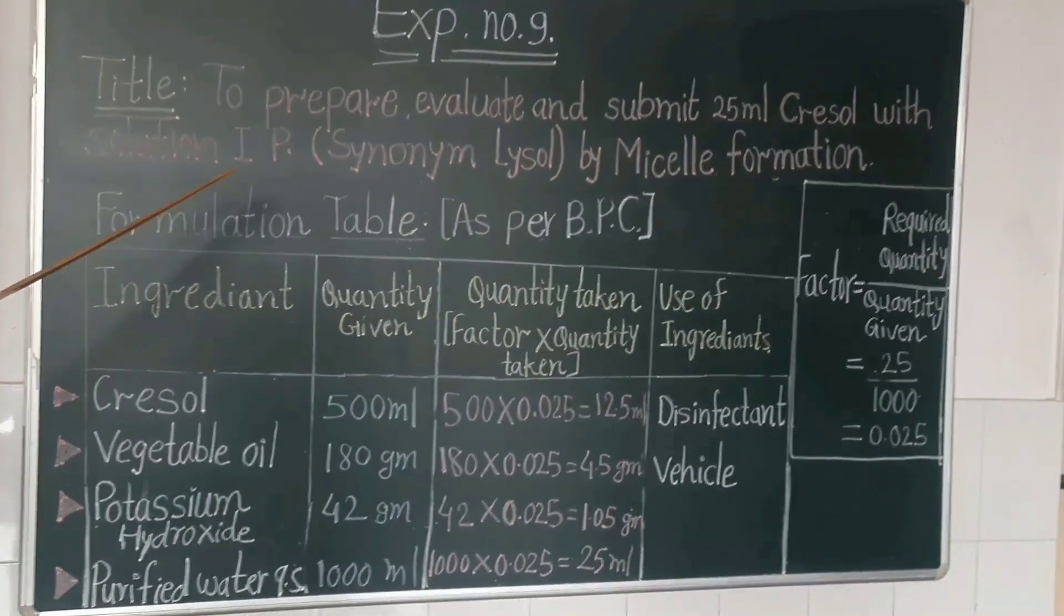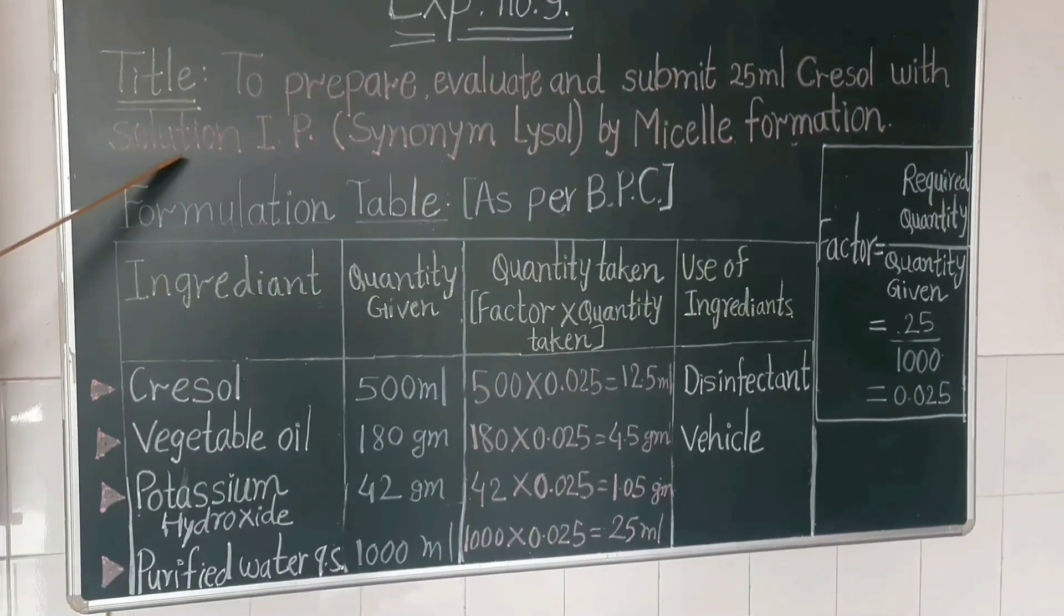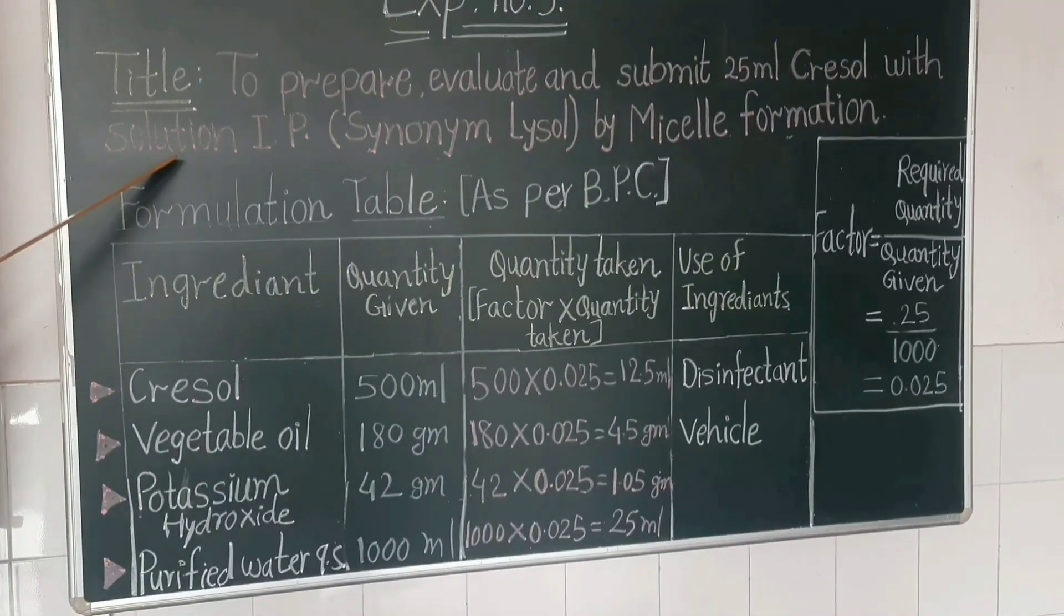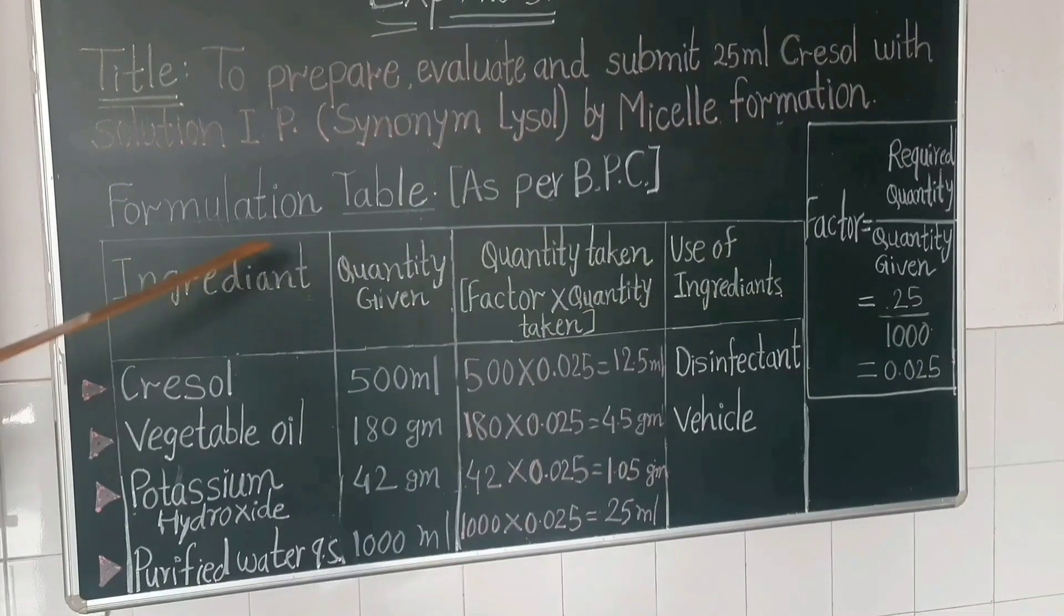Micelle: It is a unit of structure built up from polymeric molecules or ions. Formulation table as per BPC.